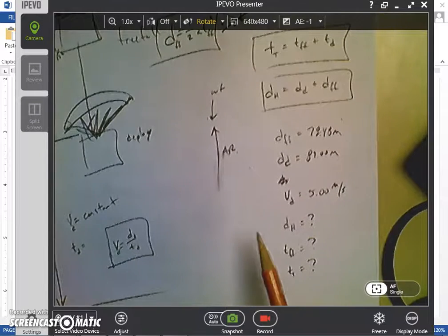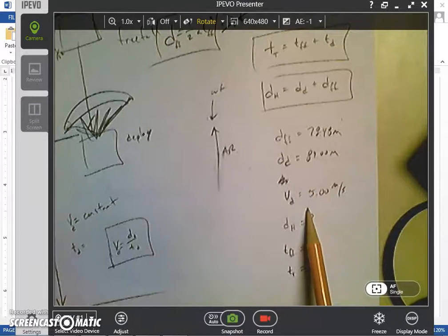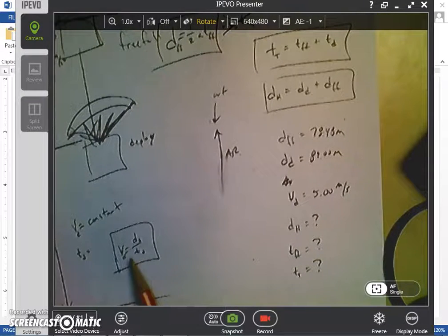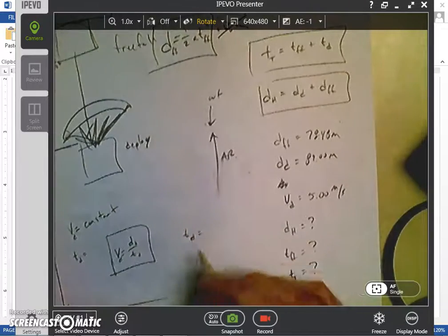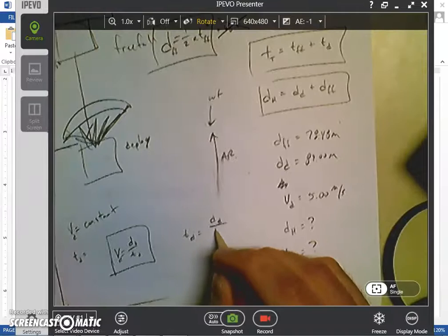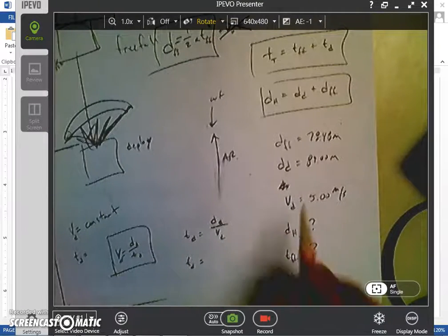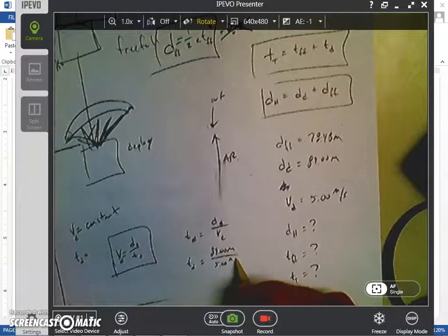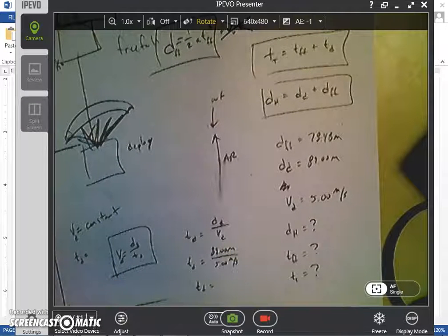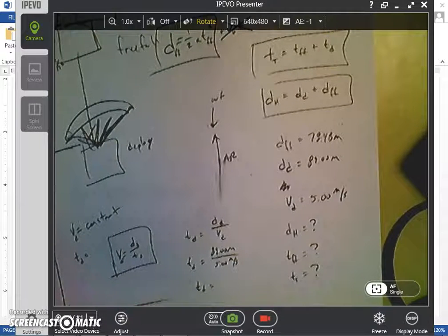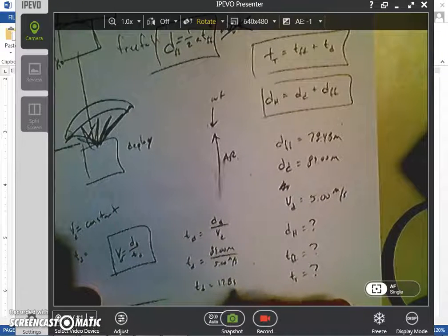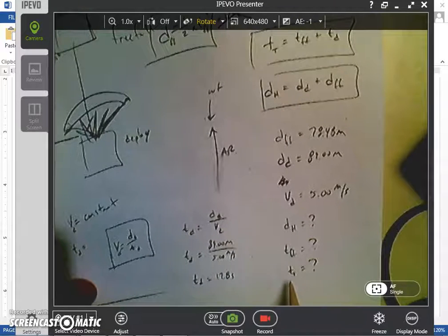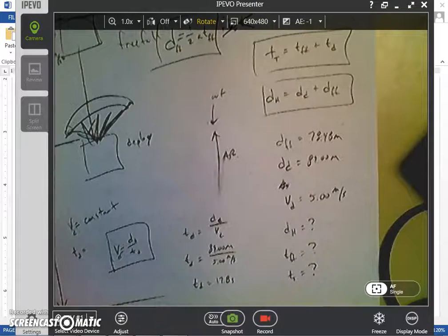So I'm going to first look at my deploy distance and my deploy velocity because from those two things I should be able to find my time of deployment. So that's what I'm going to solve for first, T_D is equal to deploy distance over deploy velocity. So we've got 89.00 meters over 5.00 meters per second, we get 17.8 seconds for that. But that's not one of the answers we want to get. It's going to help us with total time, which we'll do in a minute.